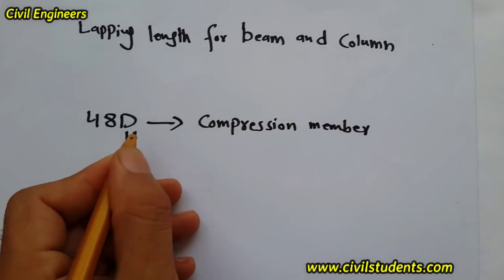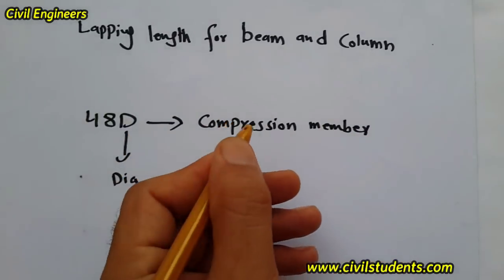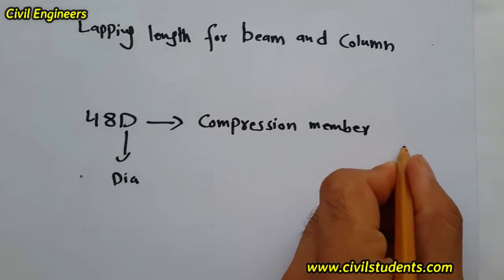So 48D is for the compression member. So what is a compression member? A compression member is a column.